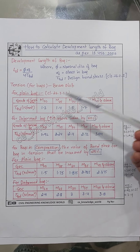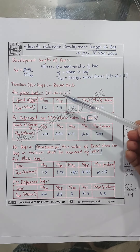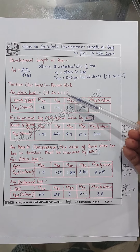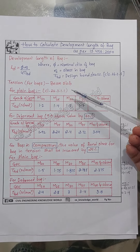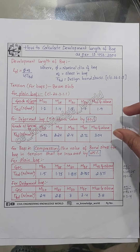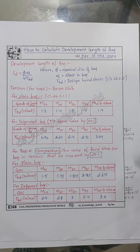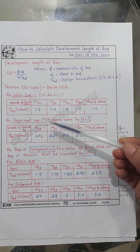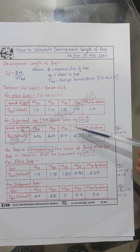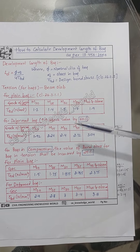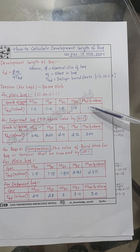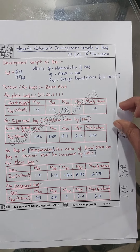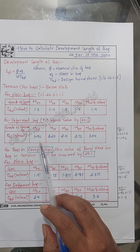For beams and slabs, for plain bars as per clause 26.2.1.1, this table is given. For deformed bars, we take the value by increasing 60 percent of the values in this table.